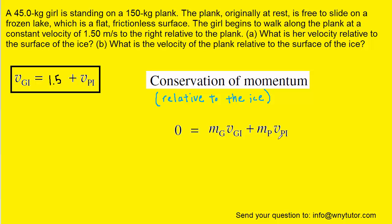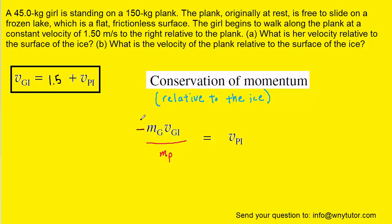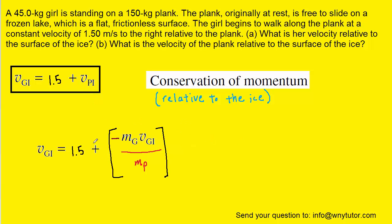Next, we solve this equation for v sub pi. To do that, we subtract the girl's momentum term over to the left side, then divide both sides by m sub p. This expression for the velocity of the plank relative to the ice can then be substituted into the equation we developed earlier. The plus and minus signs combine to become a minus, and we can drop the brackets for clarity.